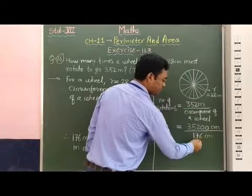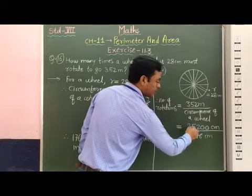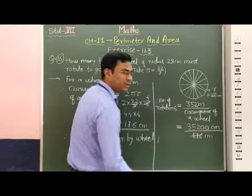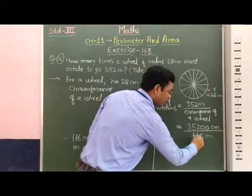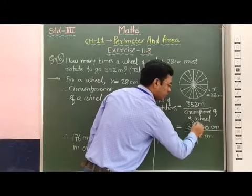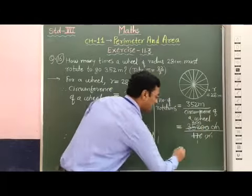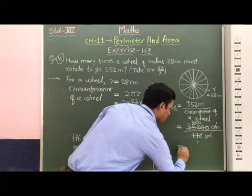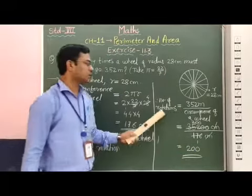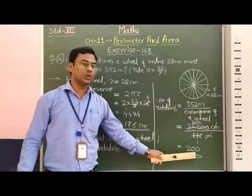Therefore, 176 and 35200 are both divisible by 176. Dividing: 35200 divided by 176 gives 1 and 2 with two zeros. The centimeter units cancel. Therefore, the answer is 200. So, the number of rotations is equal to 200.